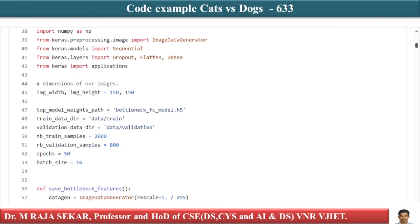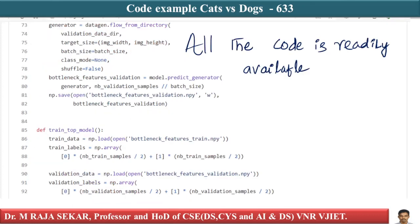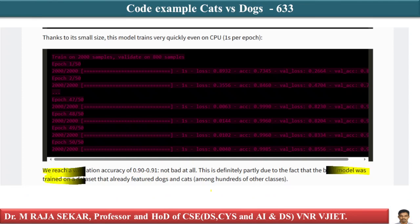When you train this model on the dogs and cats dataset, here is an explanation of the code. When they trained it, they got an accuracy of 0.90 to 0.91 — that is, accuracy of 90 to 91 percent.